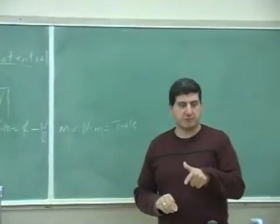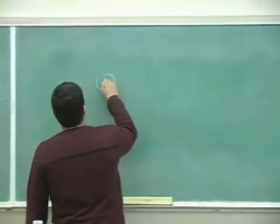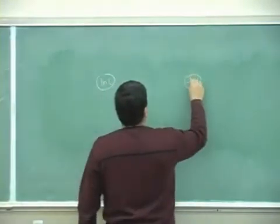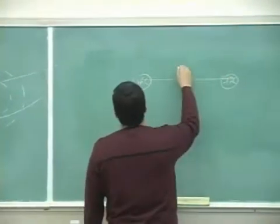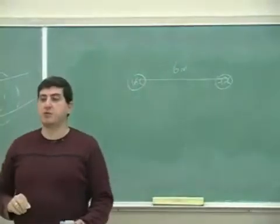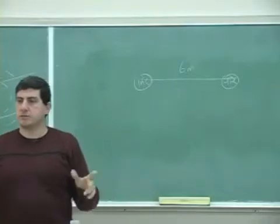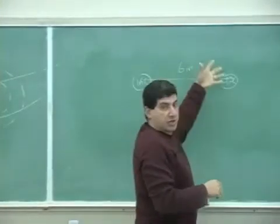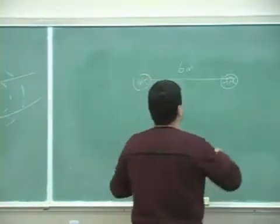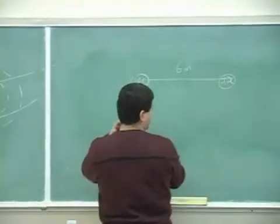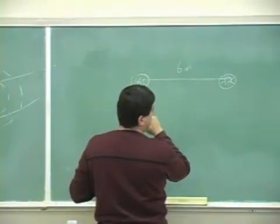If you multiply a unit of charge times a voltage difference, you get joules. Now, for a system of two charges with a distance of six meters between them, what is their potential energy? Notice they're not gaining or losing potential energy — they're just sitting there — but they still have potential energy because each one has a potential.